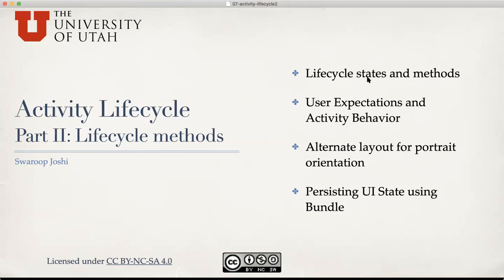We have seen lifecycle states and methods, what the user expects and activity behavior using log messages, and also pinpointed the source of our first bug: why device rotation causes destruction and recreation of the activity instance and what device configuration change actually means. Next, we'll look at creating alternative layout for portrait orientation and persisting the UI state using bundle. That is the first method we'll look at, and later we'll look at another method of doing the same.